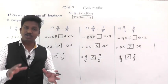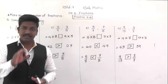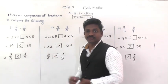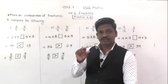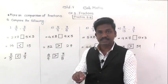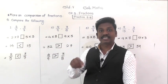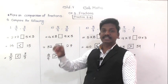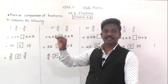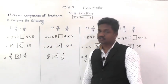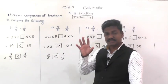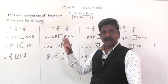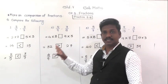So in this way we compare two fractions whose numerators and denominators are both different. In total we have learned three types of comparison: comparison of fractions having same denominators, comparison of fractions having same numerators, and comparison using cross multiplication. Understand these clearly and ask if you have any doubt.